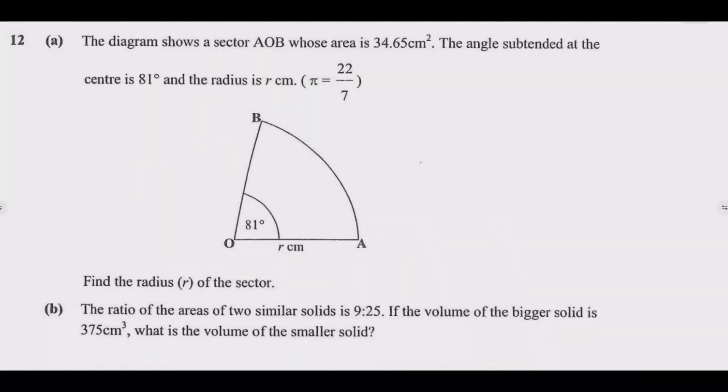Question 12 reads: The diagram shows a sector AOB whose area is 34.65 cm². The angle subtended at the center is 81° and the radius is r cm. Take π to be 22/7. Find the radius r of the sector. Then part B: The ratio of the areas of two similar solids is 9 to 25. If the volume of the bigger solid is 375 cm³, what is the volume of the smaller solid?